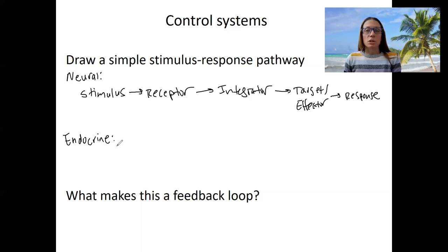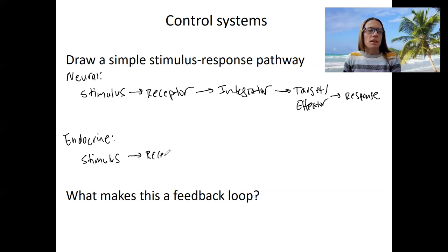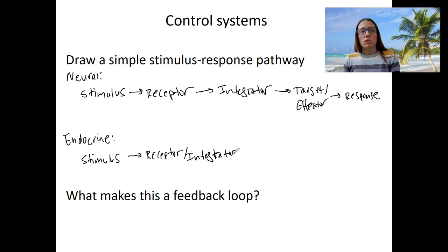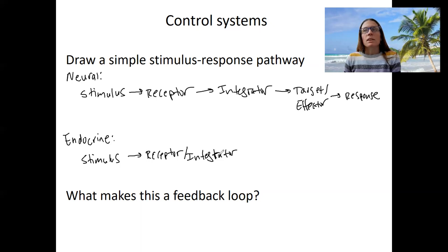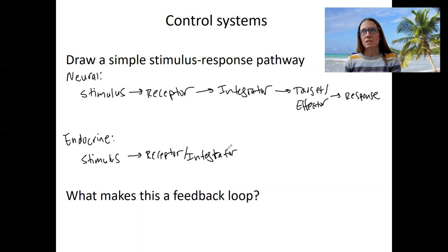For the endocrine system, if we were going to have a stimulus-response pathway, the endocrine system can act as an integrator as well. However, the main difference is the receptor is often the same thing as the integrator — the thing that detects whatever variable we're talking about is also the thing that makes a decision. The pancreas is a good example.